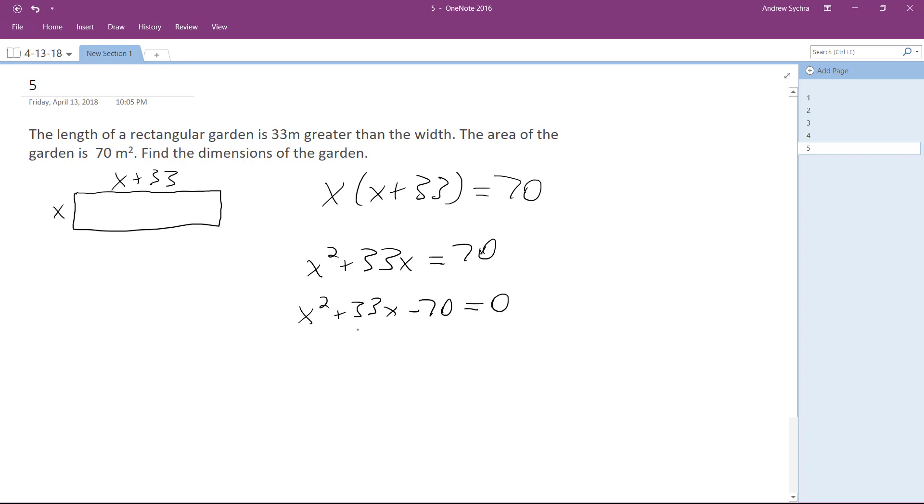So I know what the factors are, but I'll just put it in the quadratic equation. So we have negative 33 plus or minus the square root of - this is a mess - minus 4 times 1 times negative 70.